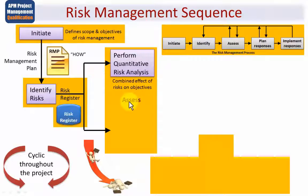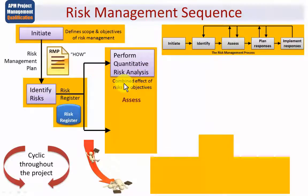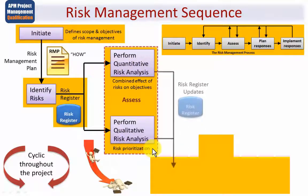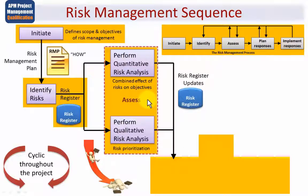That brings us to the next step: assessing each risk, and there are two approaches. The first is quantitative risk analysis, which uses actual quantities or numbers to assess the combined effect of risks on the project objectives. In parallel, you'll also be performing qualitative risk analysis, which is subjective and uses language such as high, medium and low to prioritise the risks. The results of such risk analysis are then updated on the risk register.